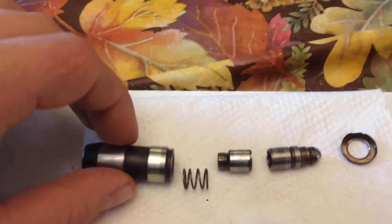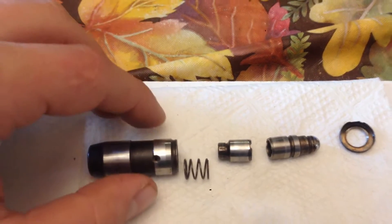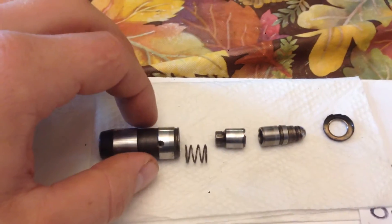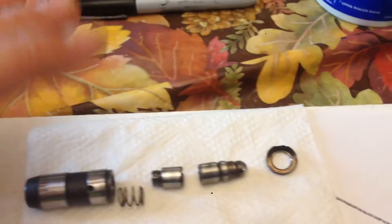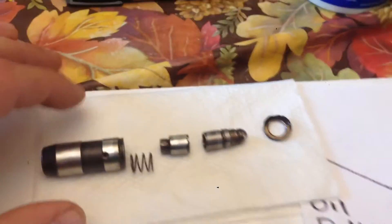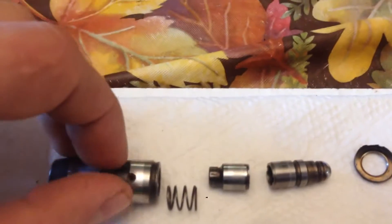Here are the parts and pieces of a lash adjuster. This came out of a 2006 F250 with the 5.4 liter three valve engine. These components you'll find in most lash adjusters.